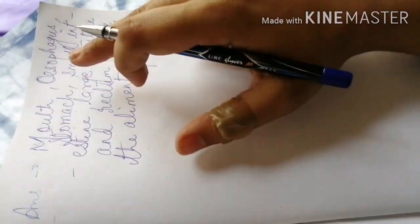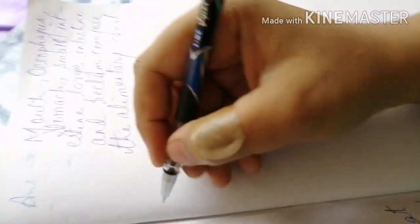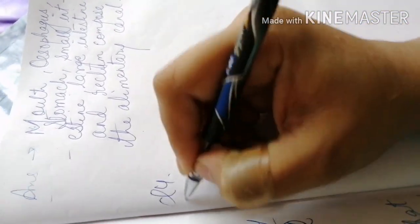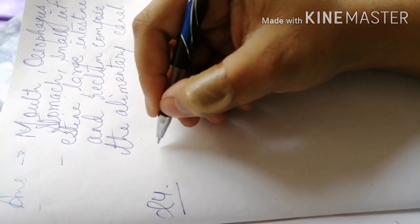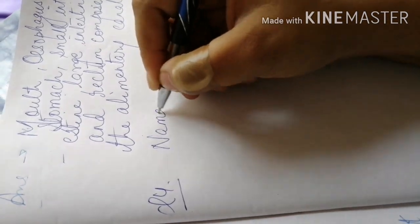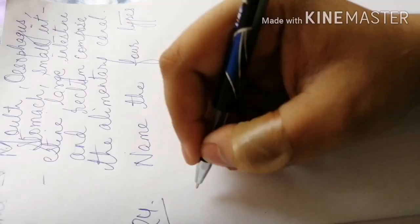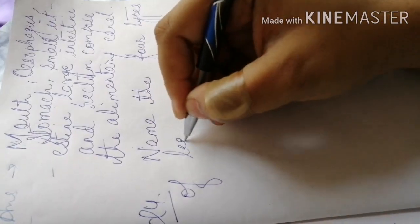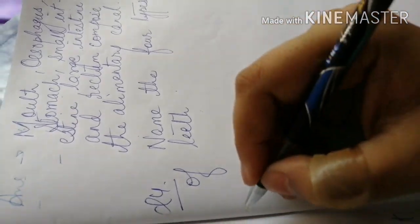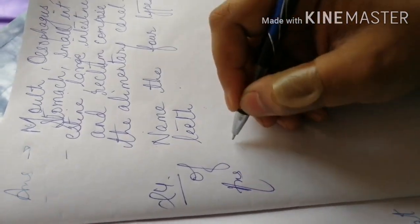Now your next question, question number 4: Name the four types of teeth. Very easy question. What types of teeth?